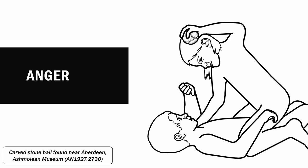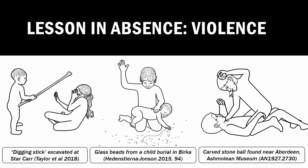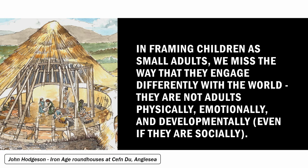Anger is a particularly interesting emotion to explore in relation to children, because one thing we never see in reconstructions — because it's unpleasant — is the representation of children as both victims and perpetrators of violence: whether the developmental violence of hitting your sibling with a stick to see what happens, or the sanctioned violence of discipline and abuse, or the violence of conflict. Children have the capacity to participate in this violence, but we don't think of them as having this capacity, so we don't see it represented, and we don't change this narrative. Going back to the broader idea of children as small adults: when we think of children as little adults, we miss the way they engage differently with the world — they're not adults physically, emotionally, or developmentally, and it's quite interesting to explore the ways that space and objects are used in this development.